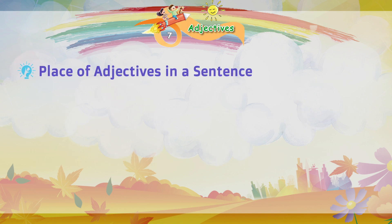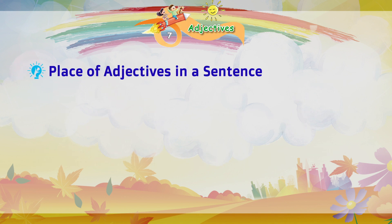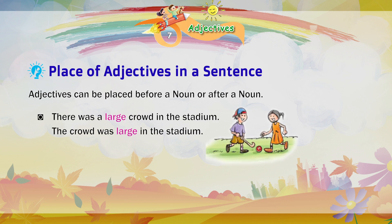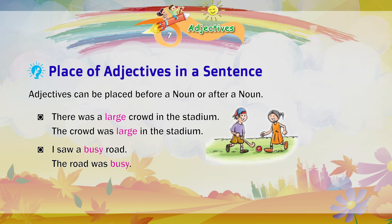Place of adjectives in a sentence. Adjectives can be placed before a noun or after a noun. There was a large crowd in the stadium. The crowd was large in the stadium. I saw a busy road. The road was busy.